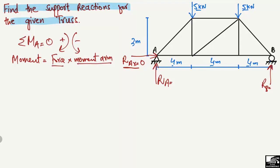The first force creating a moment about point A is 5 kN. It acts downward and creates a clockwise moment, so it is positive. The moment arm — the perpendicular distance from the load to point A — is 4 meters. So the first moment is 5 × 4 = 20 kN·m.